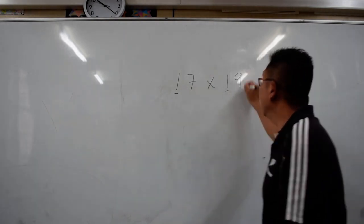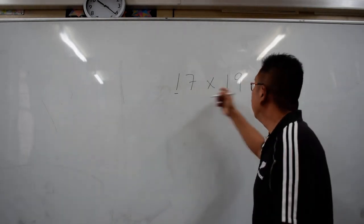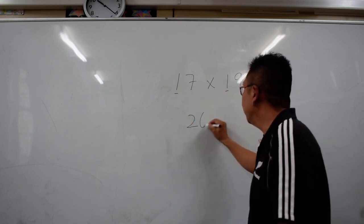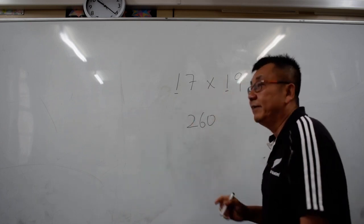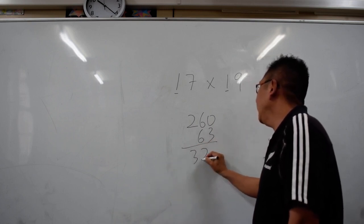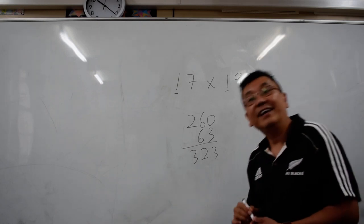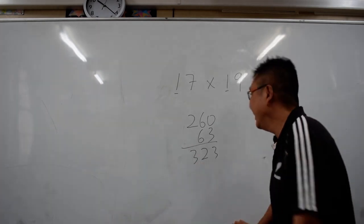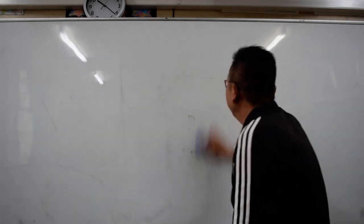17 times 19. So 17 plus 90 will give you 260. And 6 times 7 is 63. And it will add up to 323. Please check your answers again because I am not totally sure. Next trick.